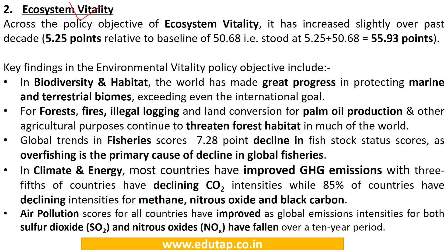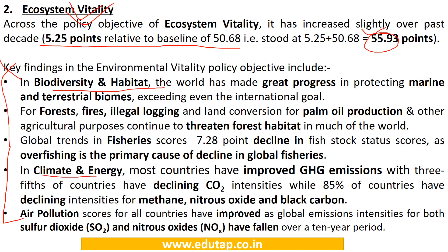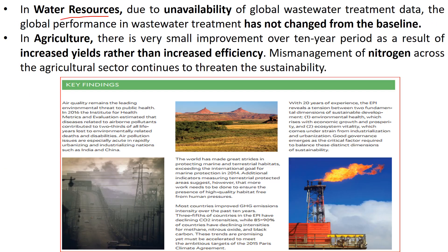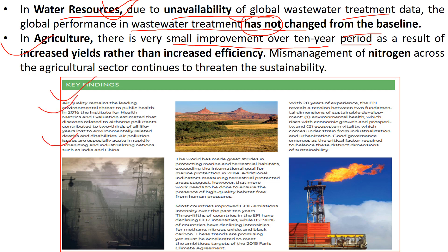Ecosystem vitality has a score of 55.93 points with an increase of 5.25 points from baseline. Among its issue categories, there are improvements in biodiversity and habitat, climate and energy, and air pollution. Fisheries show decline due to overfishing, and forest fires and illegal logging continue to threaten forest habitat worldwide. Notably, water resources is the only issue category whose global performance in wastewater treatment hasn't changed from baseline due to unavailability of data. In agriculture, despite huge efforts, there is very small improvement over the past decade.